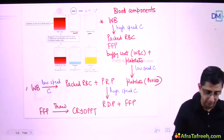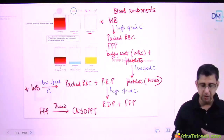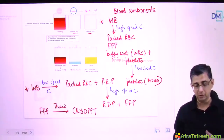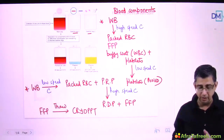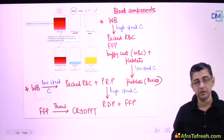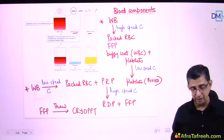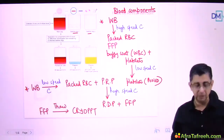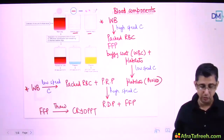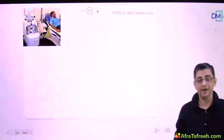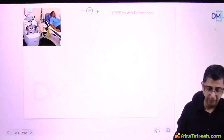Our objective is to understand how these components are generated - two methods: initially high speed followed by low speed, or low speed followed by high speed spin. You can generate these blood components. Subsequently we will study where these components are used. Let us start with packed RBCs.